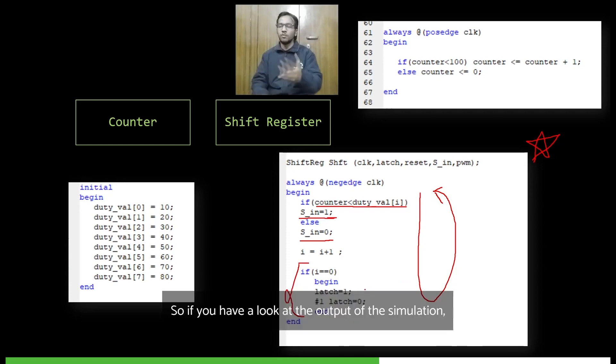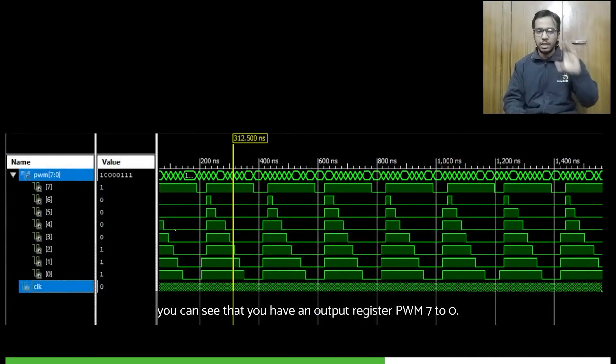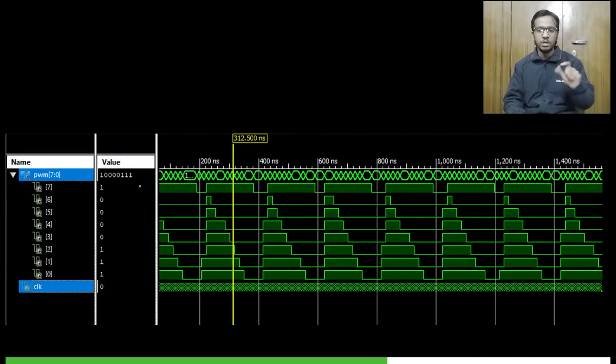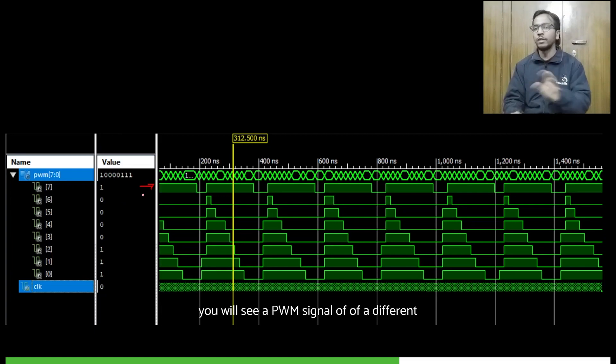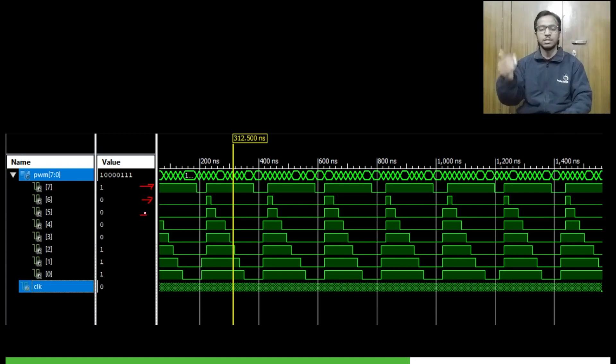So if you have a look at the output of the simulation, you can see that you have an output register PWM 7 to 0. This 8-bit output has PWM signals on every bit. If you have a look at each bit individually, you will see a PWM signal of a different duty cycle. Say on PWM 7 you have a PWM signal of an 85% duty cycle, and on PWM 6 you have a signal of 10% duty cycle, 20%, 30%, and so on. And the only input required for the whole module was the clock input that we gave.